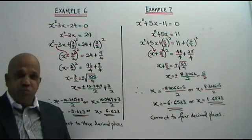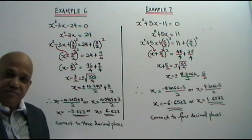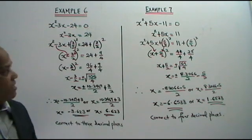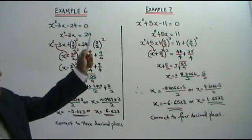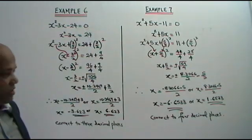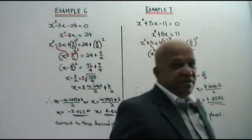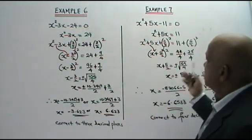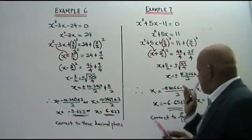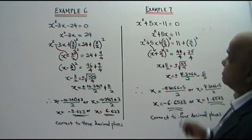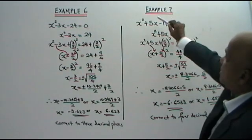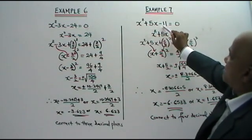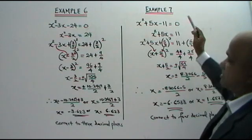I hope you get it. It's very clear. Now let me go on to example 7. x squared plus 5x minus 11 equals to 0.